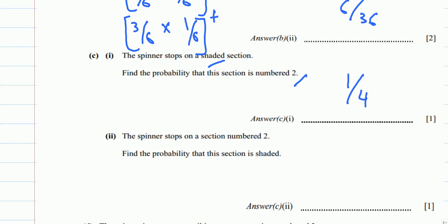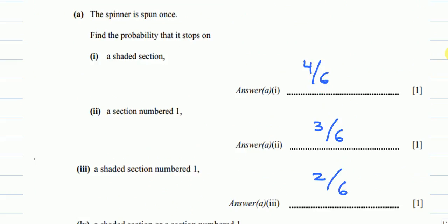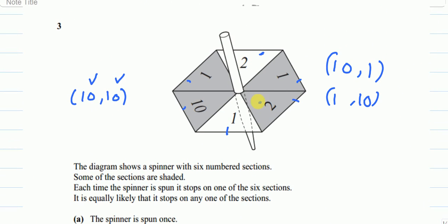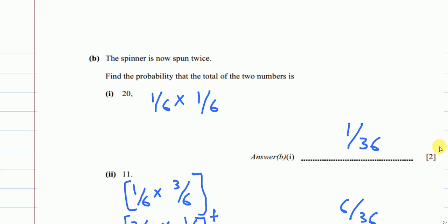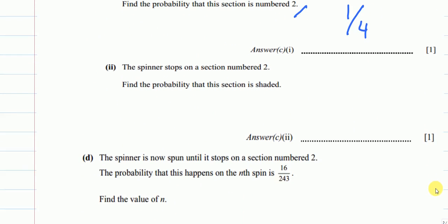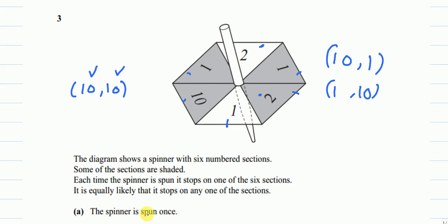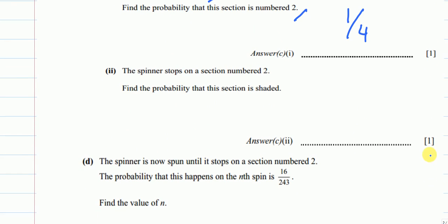For part 2: the spinner stops on a section numbered 2. Find the probability that this section is shaded. This is the opposite situation. It has already stopped at 2 — there are two 2s on the spinner. Out of those two, only one is shaded. So the answer is 1 out of 2.